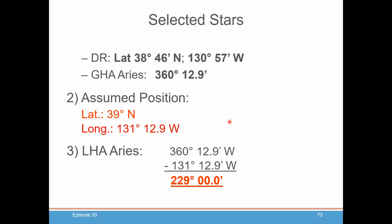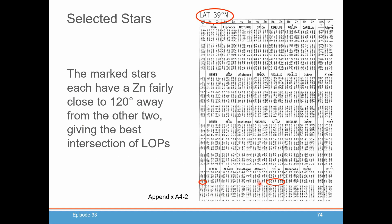We're going to do an assumed latitude of 39 degrees north, because that is what 38 degrees, 46 minutes north rounds to. And your longitude, you're going to pick 131 degrees, 12.9 minutes west, because that's the closest assumed longitude to your DR longitude that gives you the smallest whole number of degrees of LHA of Aries, which comes out to 229 degrees. Now you open up volume 1 of Pub 249, and you open it up to the table for your assumed latitude, which we said was 39 degrees. Then you go down to your LHA of Aries that you just calculated, which was 229. And you're going to see a list of seven stars.